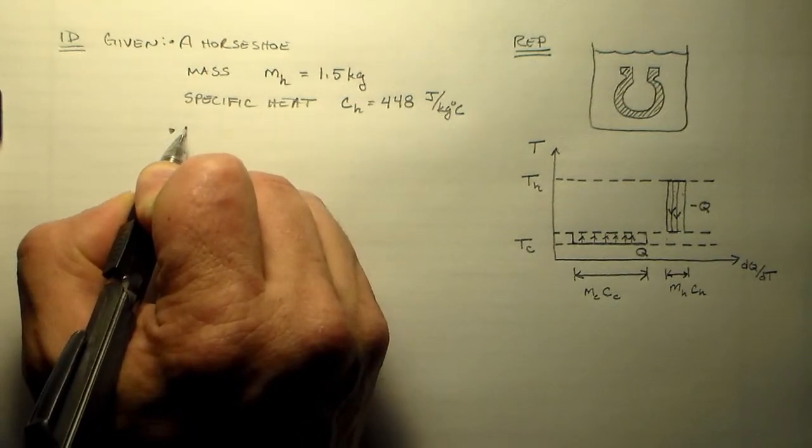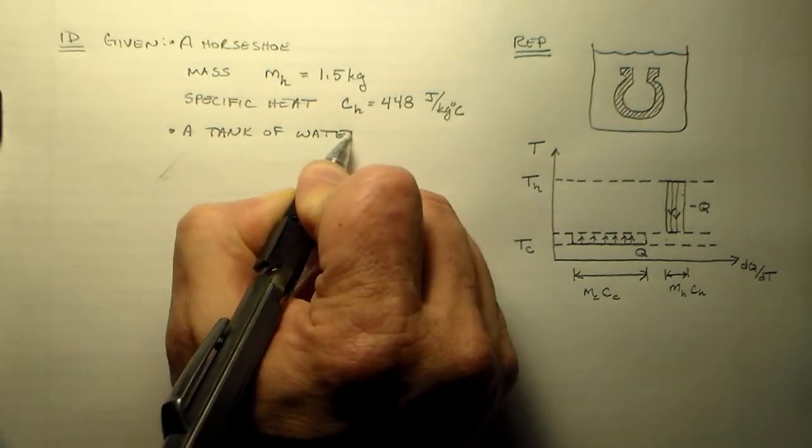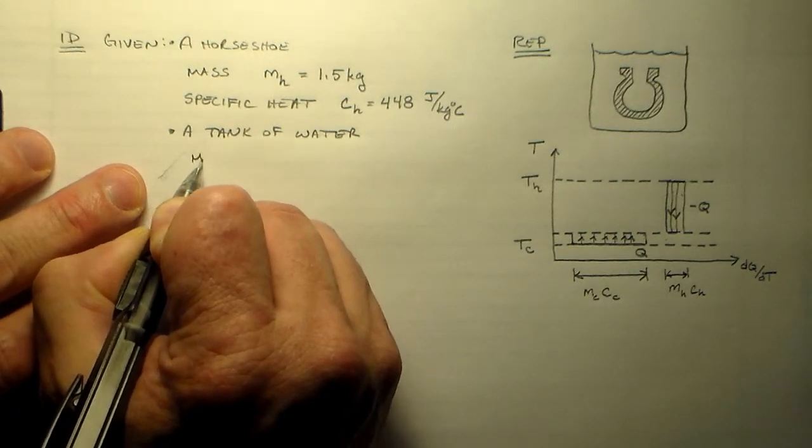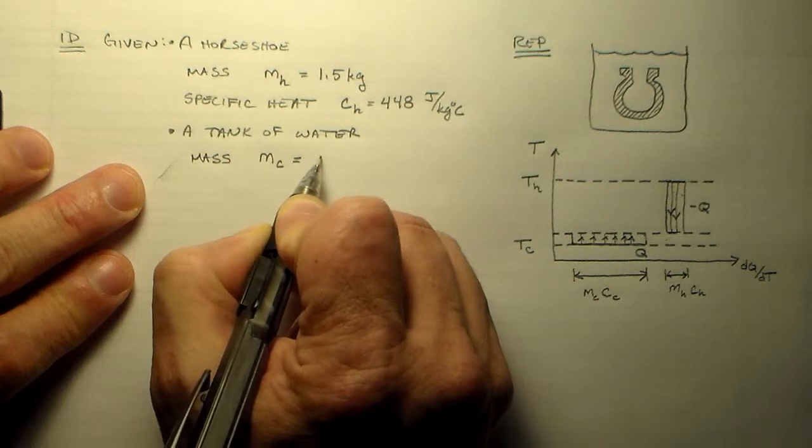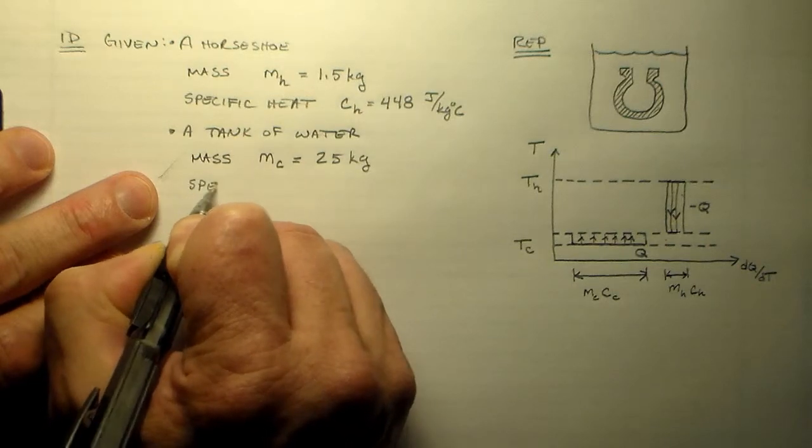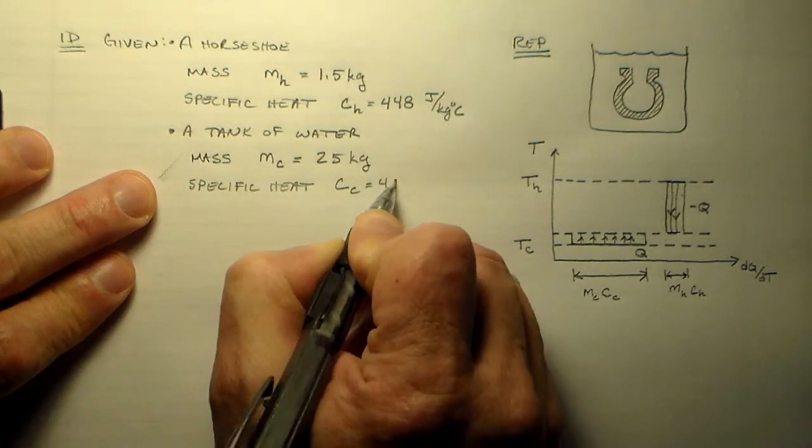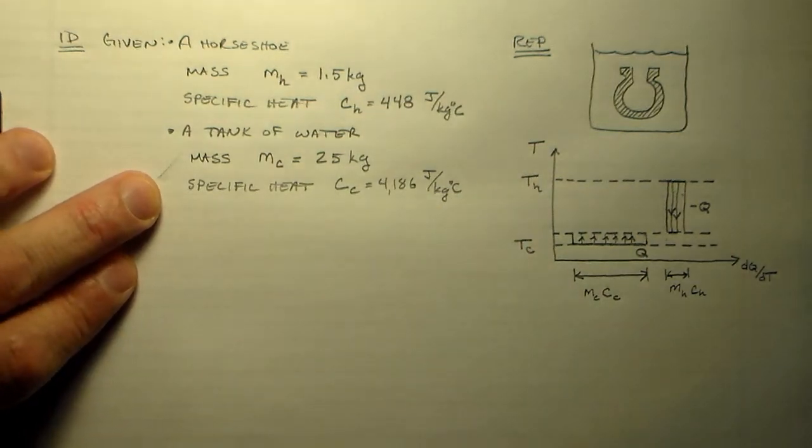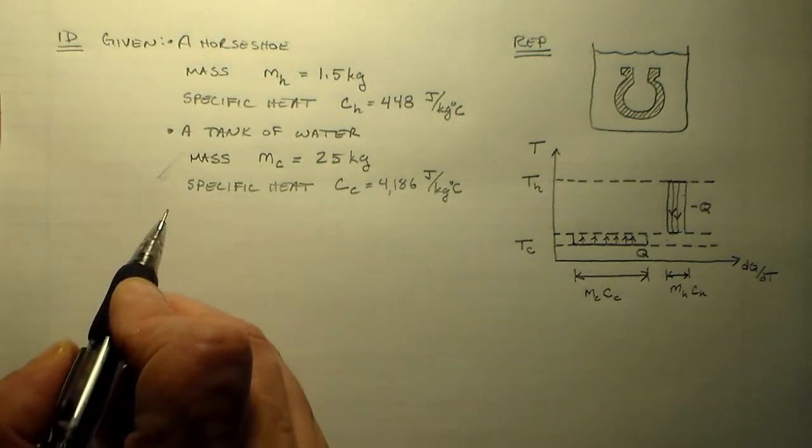And we have a tank of water, probably a barrel of water. That's the way the blacksmith rolled. So we have a mass of water, m of the cool water is equal to 25 kilograms. And we have a specific heat, again, of water, which is 4,186 joules per kilogram degree C. And again, we're going to assume this doesn't change over the entire temperature range that the water is heating up, which is probably fine.